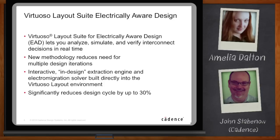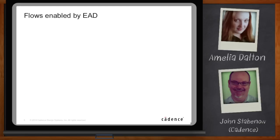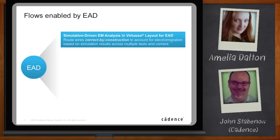There are three major flows supported in electrically aware design. The first is simulation-based EM analysis. As a circuit designer, you use an analog design environment to do simulations, and it captures currents. Until EAD, we hadn't been able to pass that information forward into the layout environment. Now the layout designer never really sees it directly, but as EAD does the extraction and the EM solver does its work, the layout designer gets real-time feedback on electromigration issues. This is really a layout designer's flow.